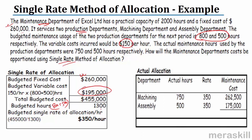So how will you allocate now? The machining department actually used 750 hours and assembly used 500 hours. The rate is $350. Apply it — this is the apportioned cost. This is how the maintenance cost will be apportioned. There may actually be a difference between the absorbed and actual costs, but you understand how the maintenance costs are going to be apportioned to machining and to assembly.